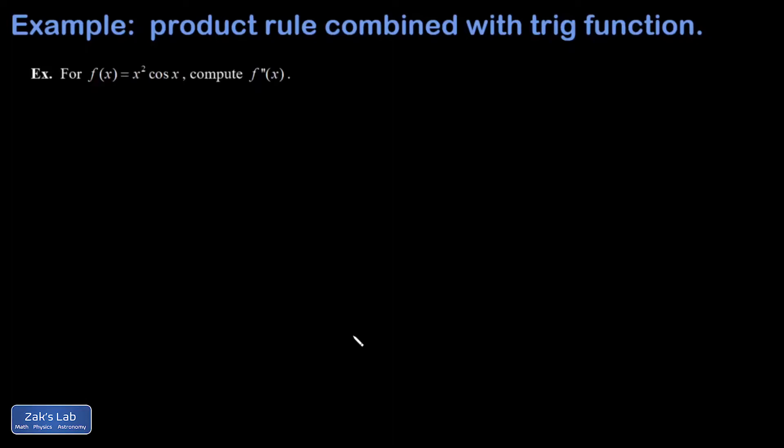In this video, we're asked to compute a second derivative of a function that involves the product of x squared and the cosine function. So we're going to have to apply the product rule twice. Typically, that makes things get really complicated. So let's see what happens here.